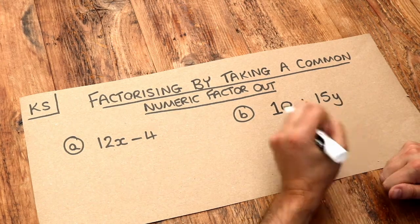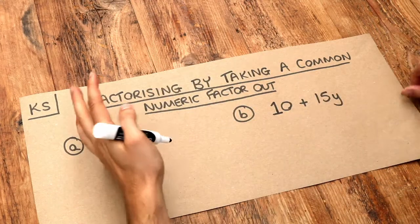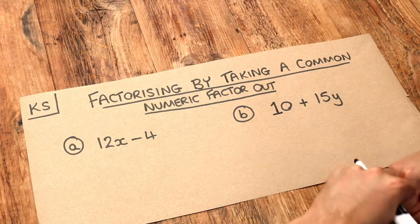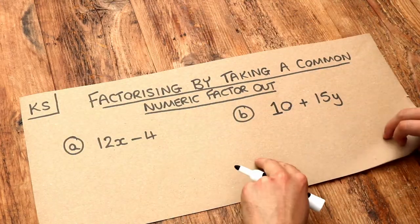Factorising is just the opposite of expanding. When we're expanding brackets, we're getting rid of the brackets, whereas to factorise something means to put it into brackets. So it's the product of some things, usually involving brackets.